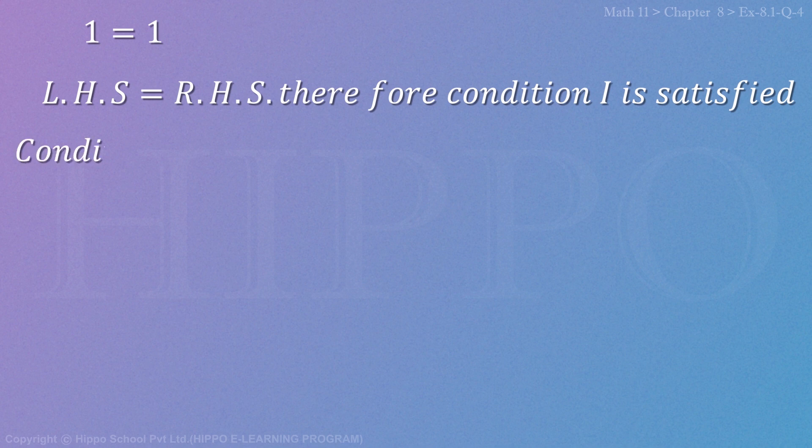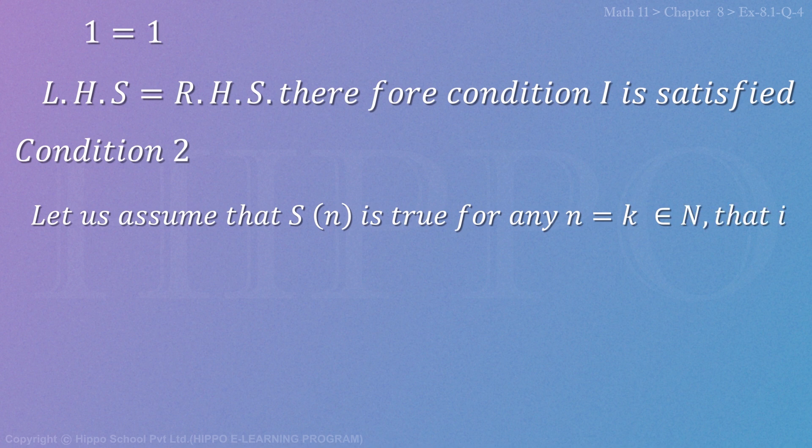Condition 2: Let us assume that S(n) is true for any n = k belonging to N, that is S(k). Now replacing n with k: 1 + 2 + 4 + ... + 2^(k-1) = 2^k - 1, which is our equation number 1.